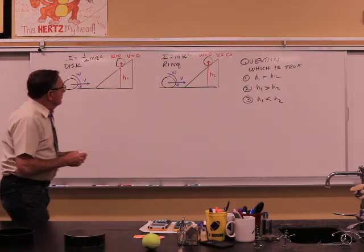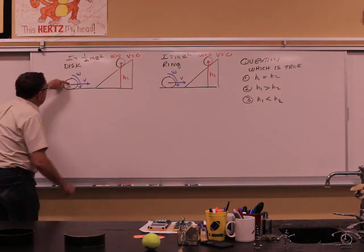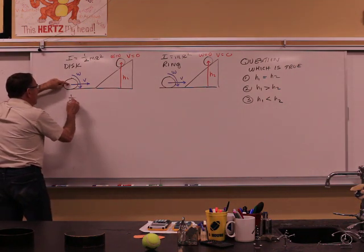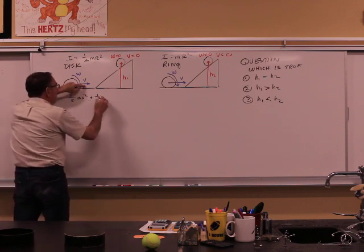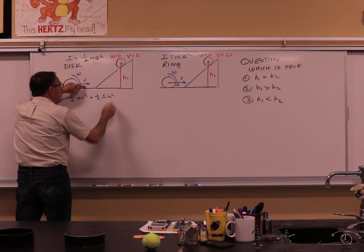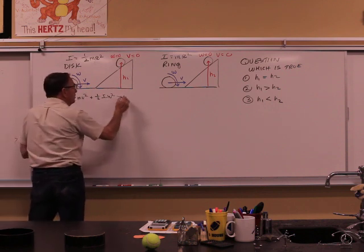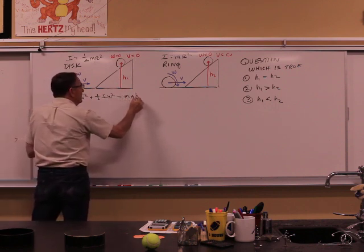The easy way is to do it by energies. Over here this has one half mv squared linear. It also has one half I omega squared rotary. It all goes to mgh1.